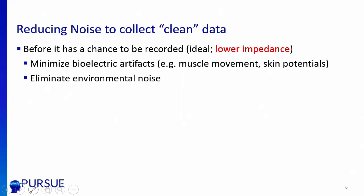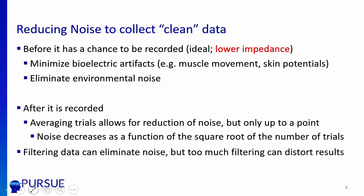There are a couple of ways to reduce noise and collect clean data. Before you collect the data — which is where it's ideal — for EEG purposes, one of the best things we can do is lower impedance and have a really good prep to record activity. We want to minimize electrical artifacts, either coming from the person's body or from the environment itself. After recording, we can average across trials — more trials is better for canceling out noise — and we can apply appropriate filters to electronically eliminate some noise. But be careful not to over-filter, because that can add distortion.